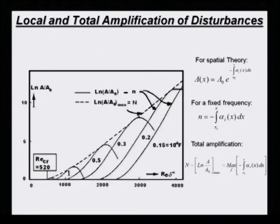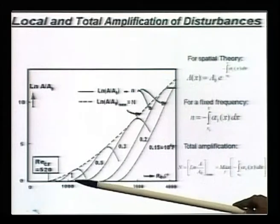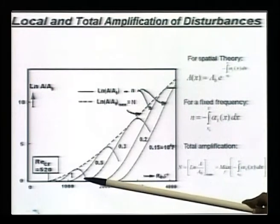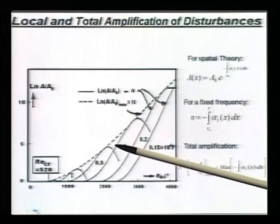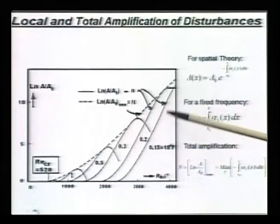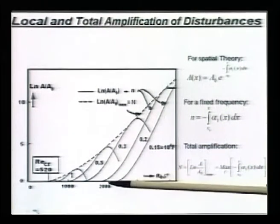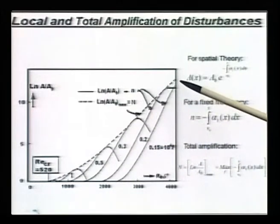We can look at the behavior of different frequencies. As the frequency increases, the flow becomes unstable at an earlier location. However, it also comes out of the unstable part earlier. That is why you see it is growing, then it flattens off, and then the amplitude starts decaying. Whereas the lower frequencies start off late, but once they are inside the unstable region, they amplify to significantly larger values. If we draw an envelope connecting the maxima of different frequencies, shown here by the dotted line, that is what we call the total amplification.